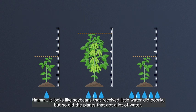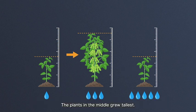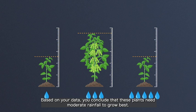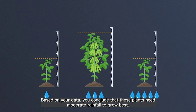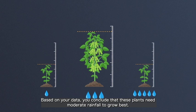It looks like soybeans that received little water did poorly. But so did the plants that got a lot of water. The plants in the middle grew tallest. Based on your data, you conclude that these plants need moderate rainfall to grow best.